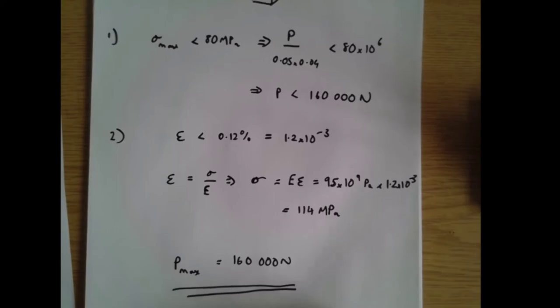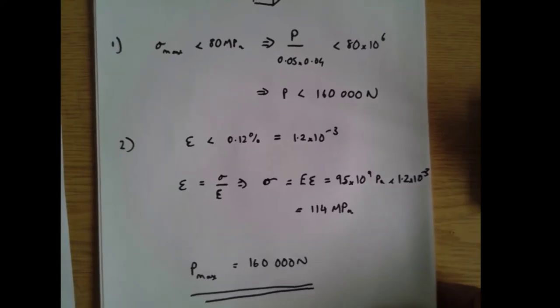The 114 megapascals doesn't matter — it's the 80 megapascals that limits us. So P max equals 160,000 newtons. That is the final answer for part 2.